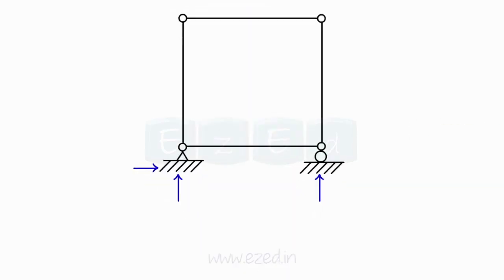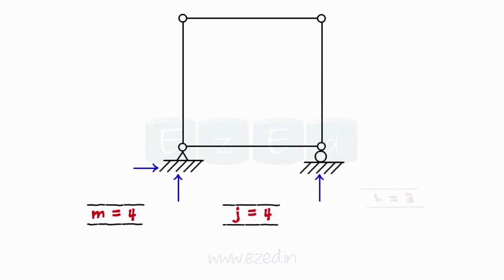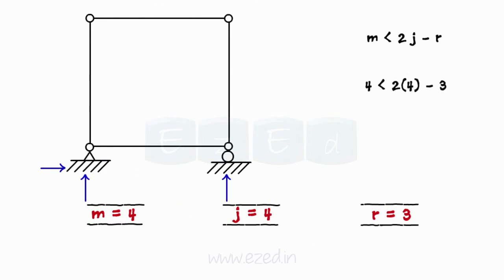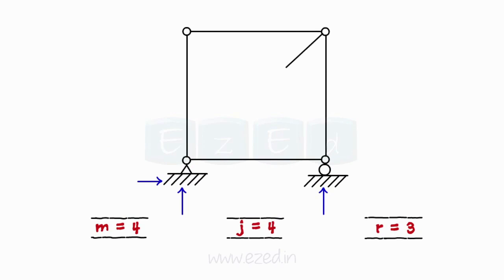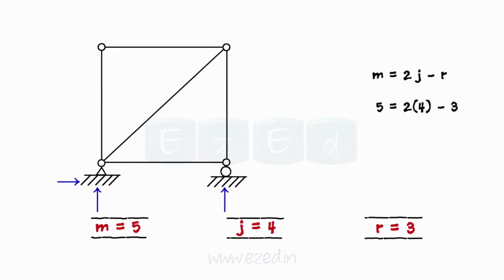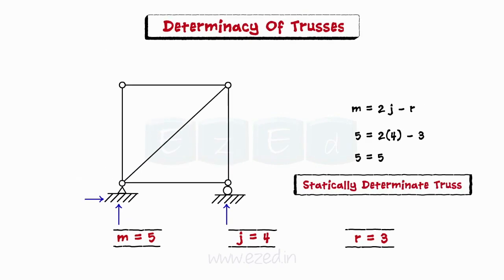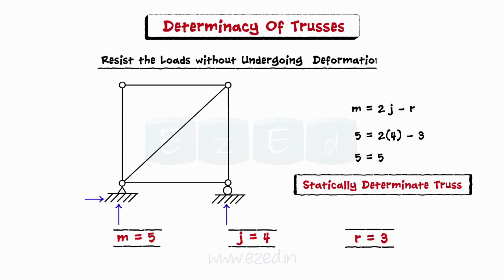Consider the rectangular truss shown alongside. It has four members, four joints, and three support reactions. Using the relation explained previously, we see that it is a deficient truss. Such trusses cannot retain their shape when loaded. Now, we will add another member between any two of the existing joints. Then, we have five members, four joints, and three support reactions. Using the relation, we find that it is a statically determinate truss. Such trusses resist the loads without undergoing appreciable deformation in shape.